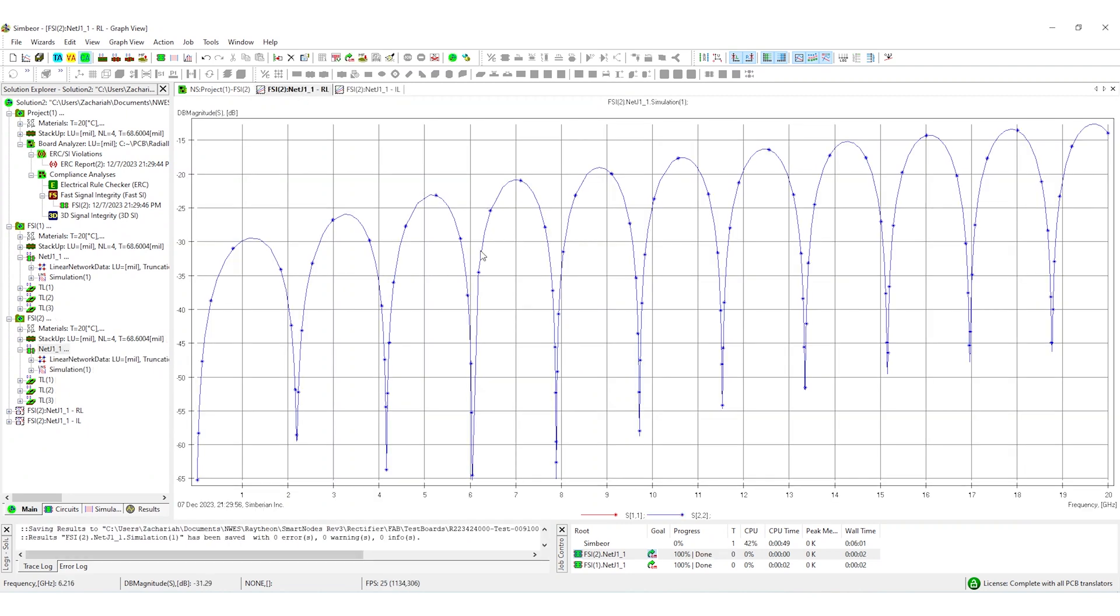So here is our return loss, and as we can see, it's pretty good all the way up to the frequency range we care about, which is 6 gigahertz and well beyond that. So you can see here we're pretty far below that negative 10 dB, and we're even pretty far below negative 20 dB, so that's pretty good.